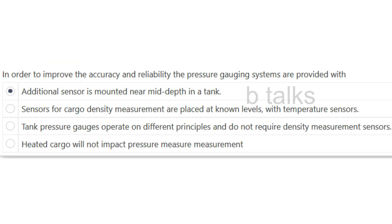In order to improve the accuracy and reliability, the pressure gauging system is provided with: Additional sensor mounted near mid-depth in the tank; Sensors for cargo density measurement placed at known levels with temperature sensors; Tank pressure gauges operating on different principles not requiring density measurement sensors; or Heated cargo will not impact pressure measurement. Answer: Additional sensor mounted near mid-depth in the tank.